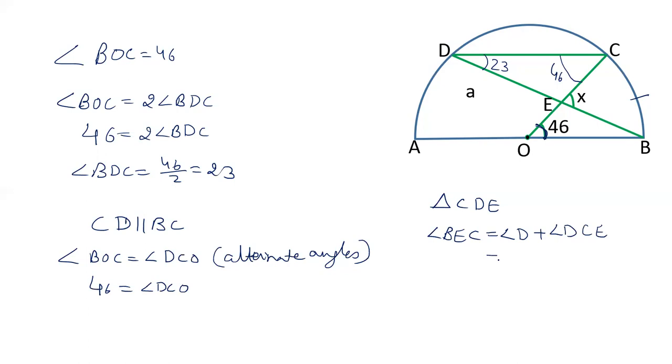We have already calculated the value of angle D which is 23, and angle DCE is 46. So the value of angle BEC is going to be the sum of 23 and 46, that is 69 degrees.